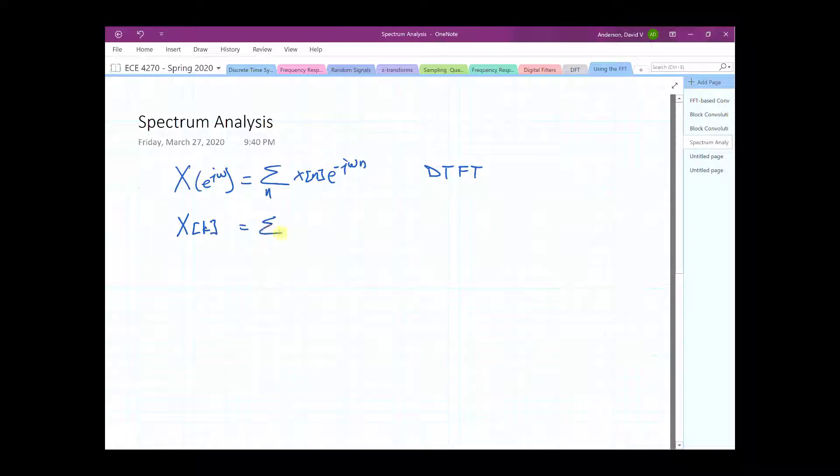We now have discrete frequencies, and the sum is done over a discrete period. Instead of omega, it's 2 pi over n times nk. So there's our DFT.